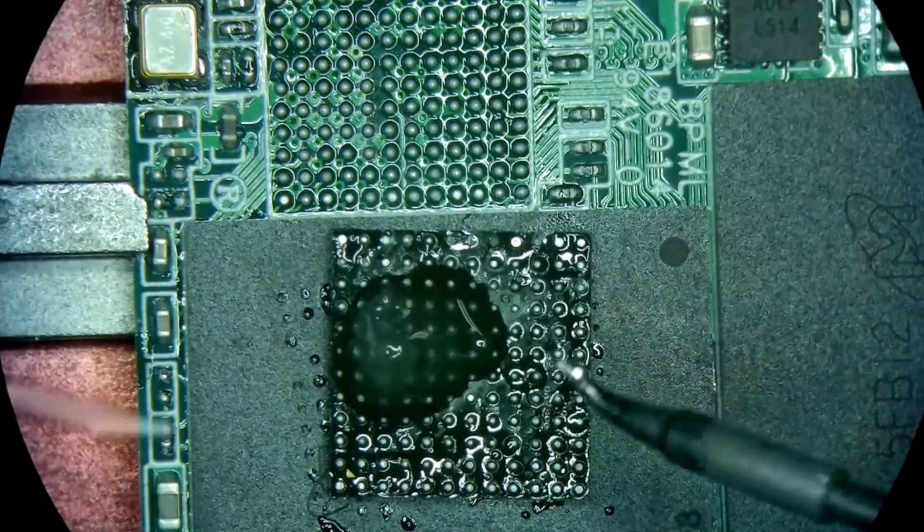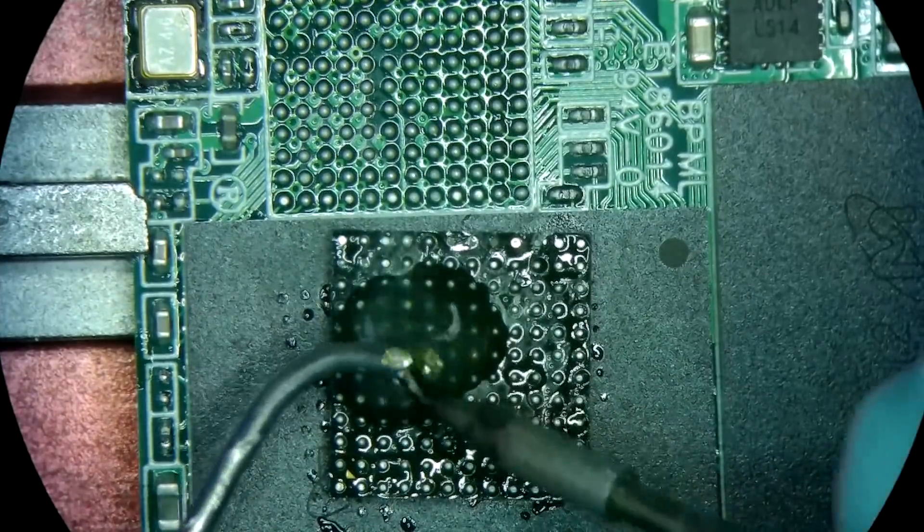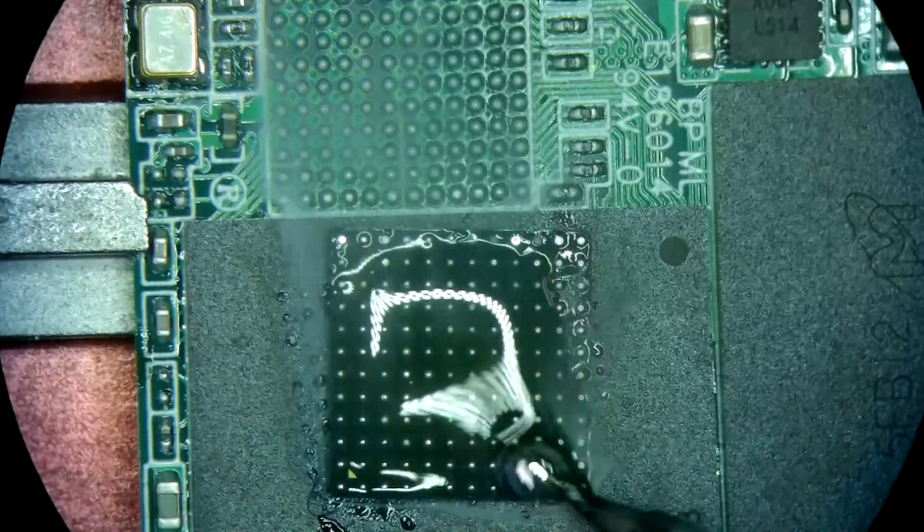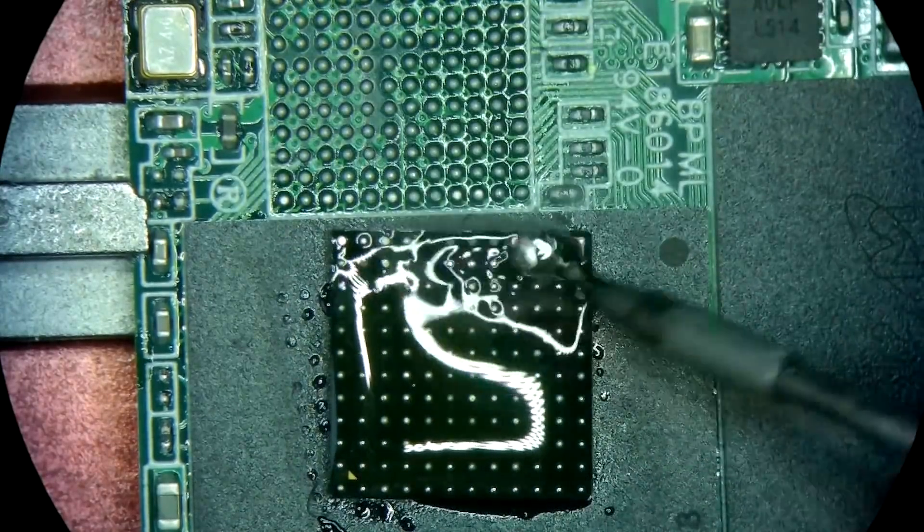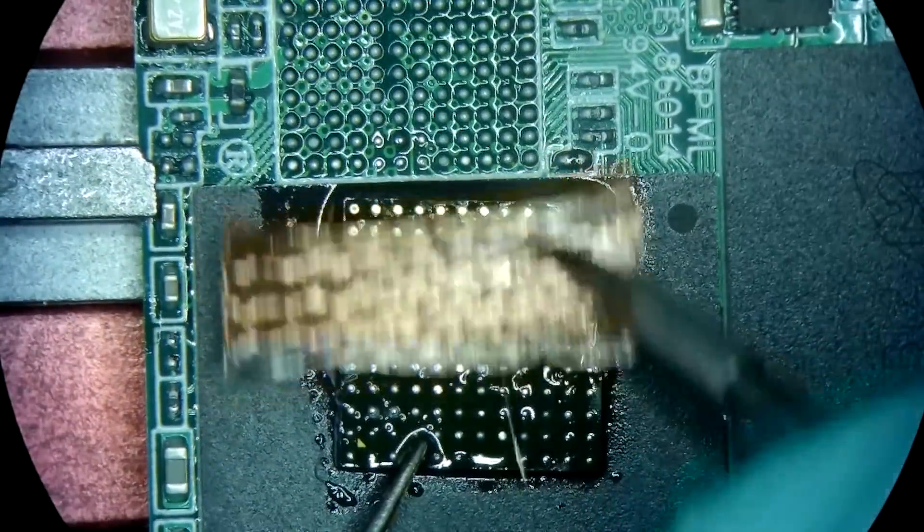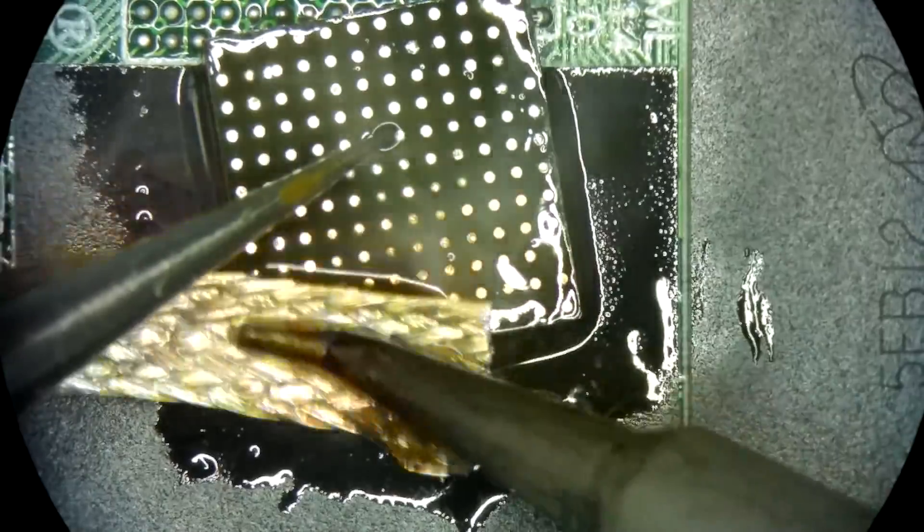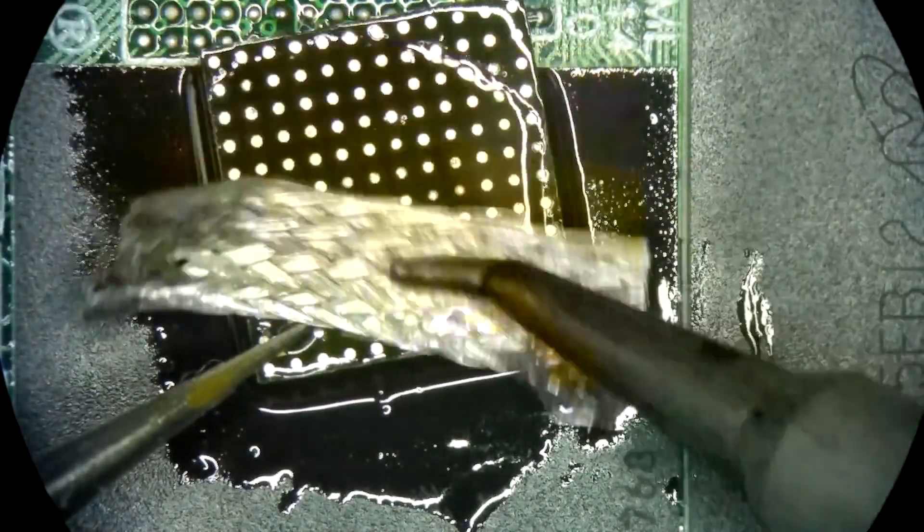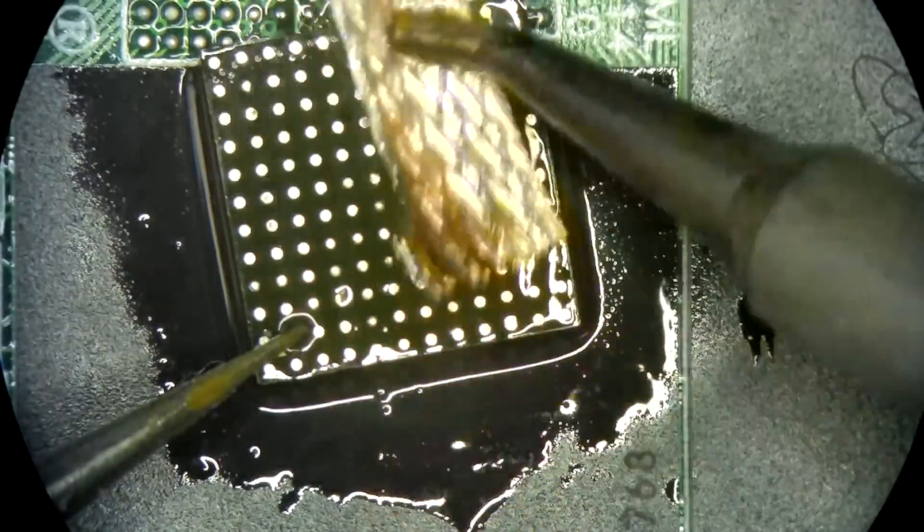In order to do the prep on the chip, we want to add flux and we want to retin every single pad so that it's shiny again. Getting rid of that darkened oxidation is the goal because that's what prevents a good signal.